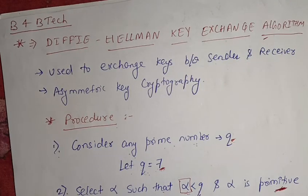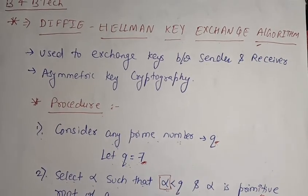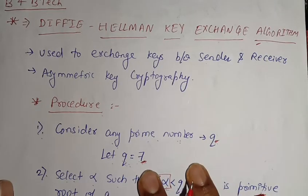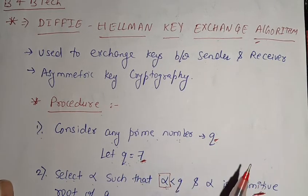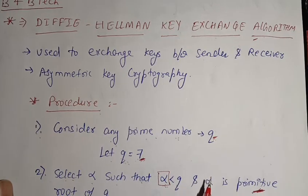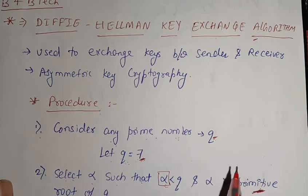That is the Diffie-Hellman key exchange algorithm. It is very simple, and with one or two reviews you will completely understand this topic. It is typically asked as an 8-mark or 16-mark exam question. If you liked this video, please subscribe to our channel, like the video, and comment below if you have any doubts. Thank you so much for watching.